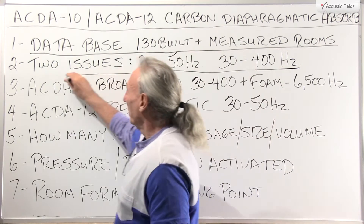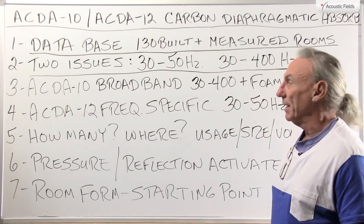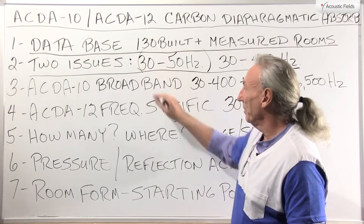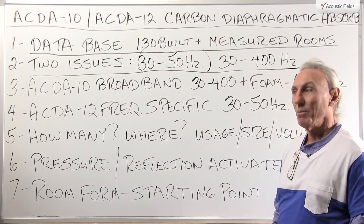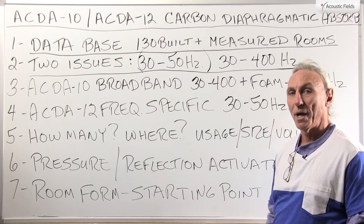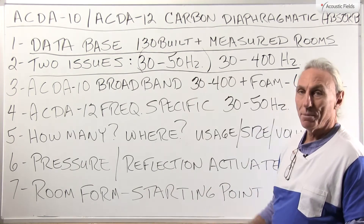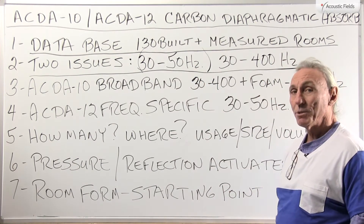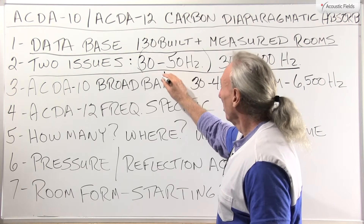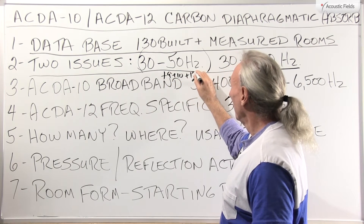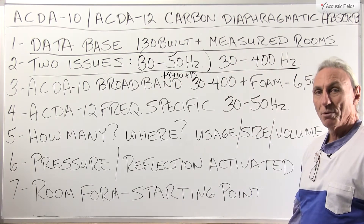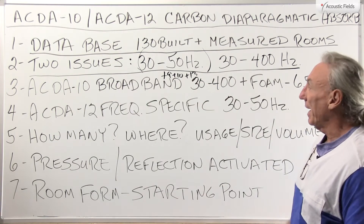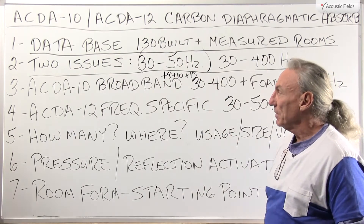I noticed two main issues in the data. The frequency range from 30 to 50 cycles was always there, almost no matter what room size you had. In 95% of our rooms between those two extremes, we had serious problems in this area — plus 9, plus 10, plus 13 dB bumps. Those are really bad and those are the hardest frequencies to deal with.